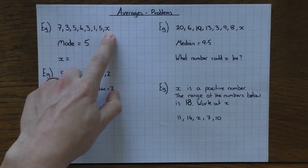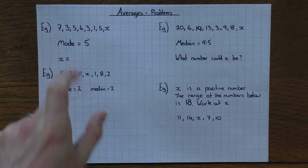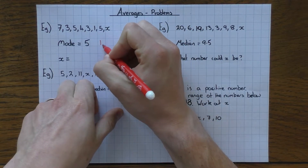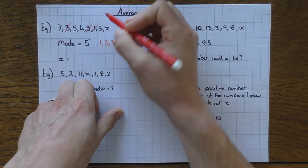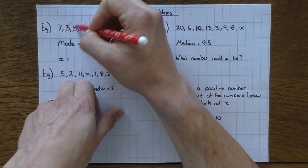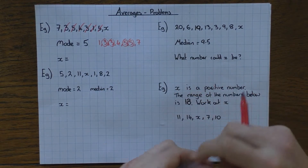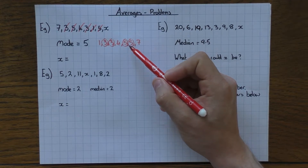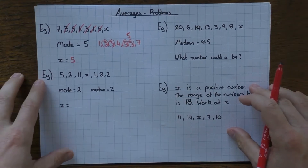Here are some numbers with a missing value x. We're told the mode needs to be 5 — what is x? The best thing to do is put the numbers in order. We've got a 1, no 2s, a 3, another 3, a 4, two 5s, and a 7. Since the mode means the most frequent value, and we have 3 appearing twice and 5 appearing twice, x needs to be 5 — giving us three 5s, making the mode 5. Nice easy start.